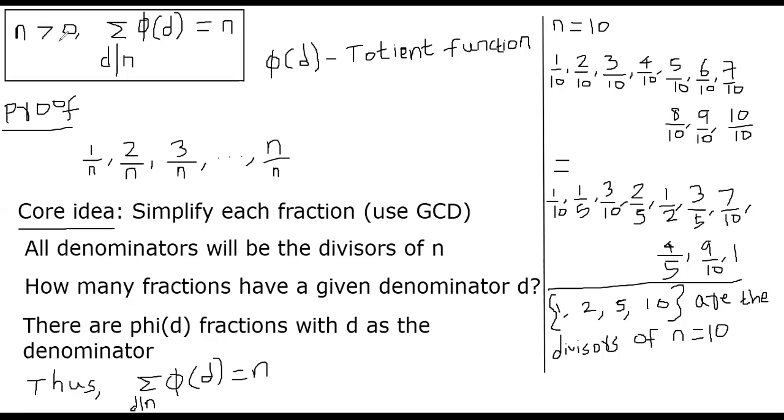Let us assume that the number n is greater than 0 and is an integer. We are now computing φ(d) for all d that divides n. φ is Euler's totient function. This is the lemma that I would like to prove: the summation of φ(d) for all d that divides n equals n.